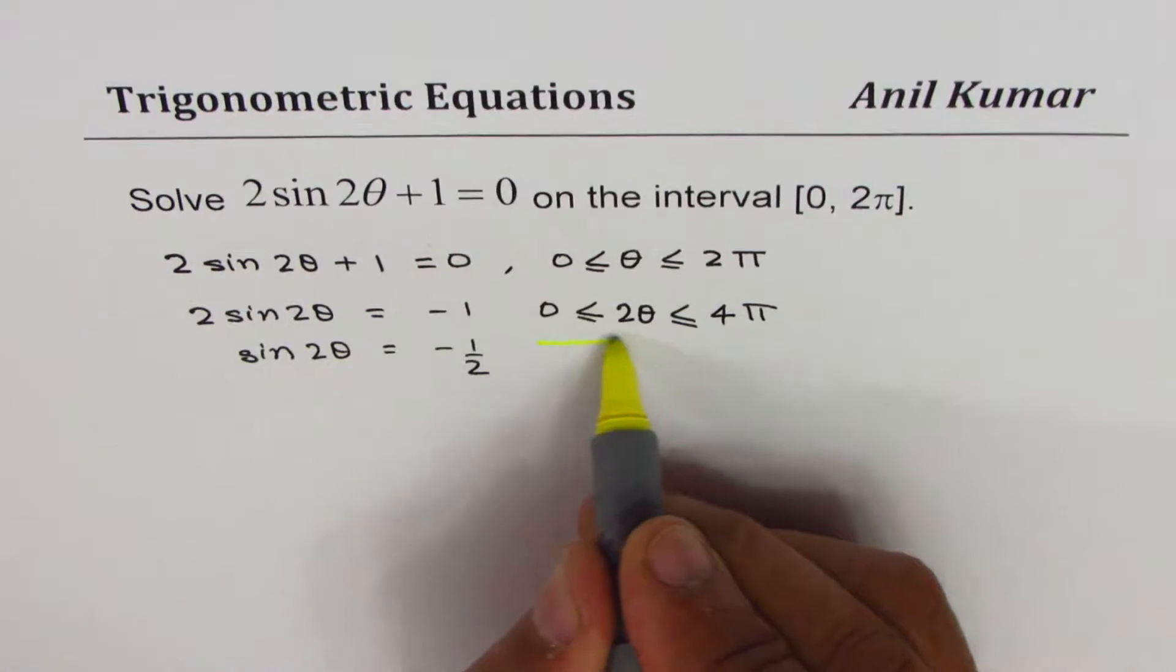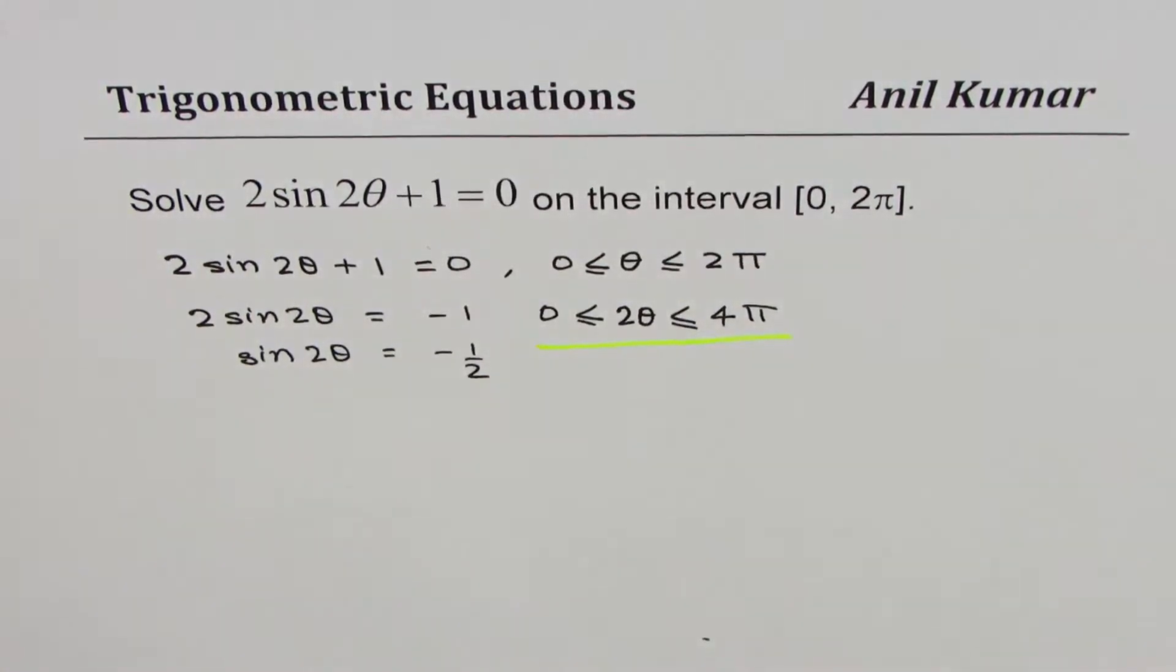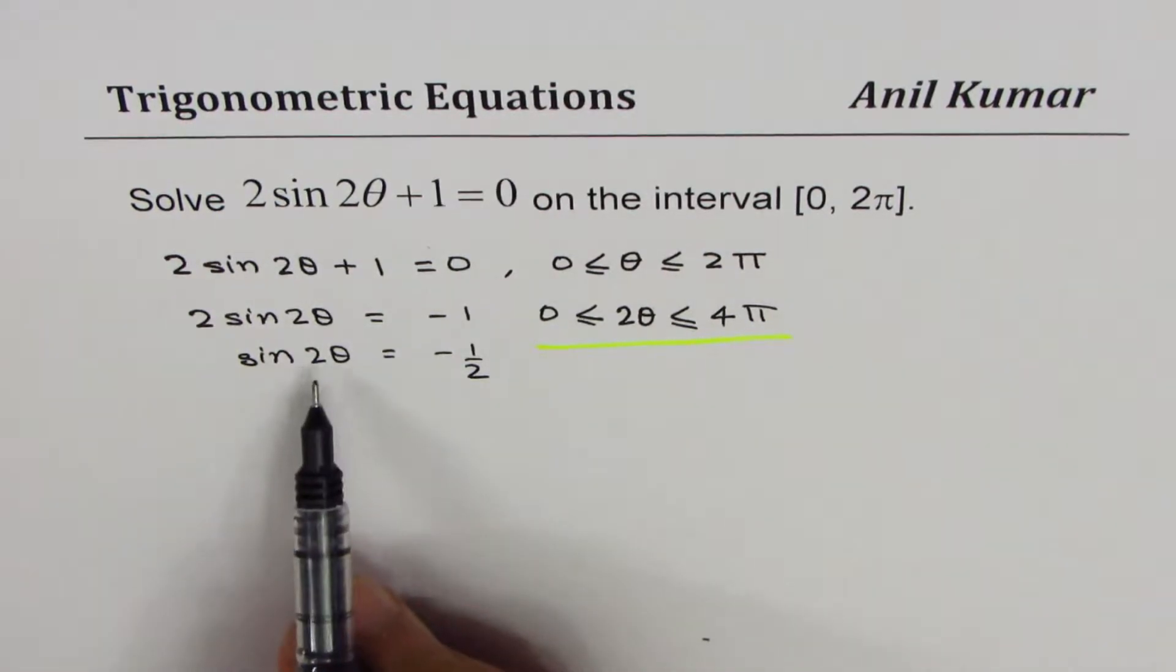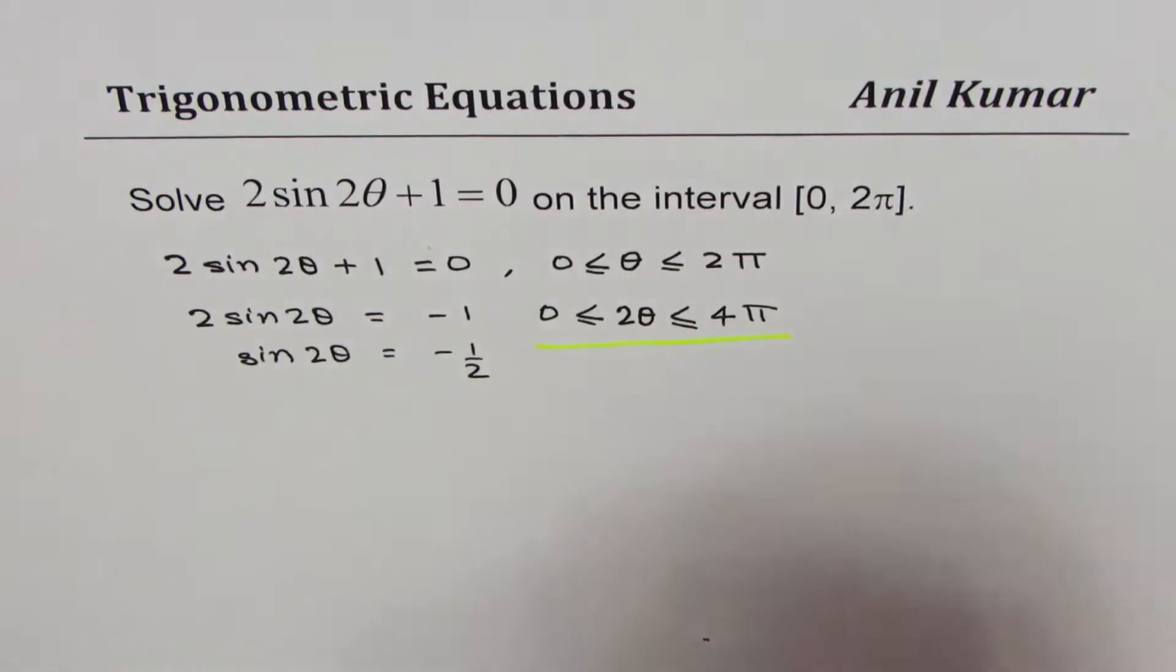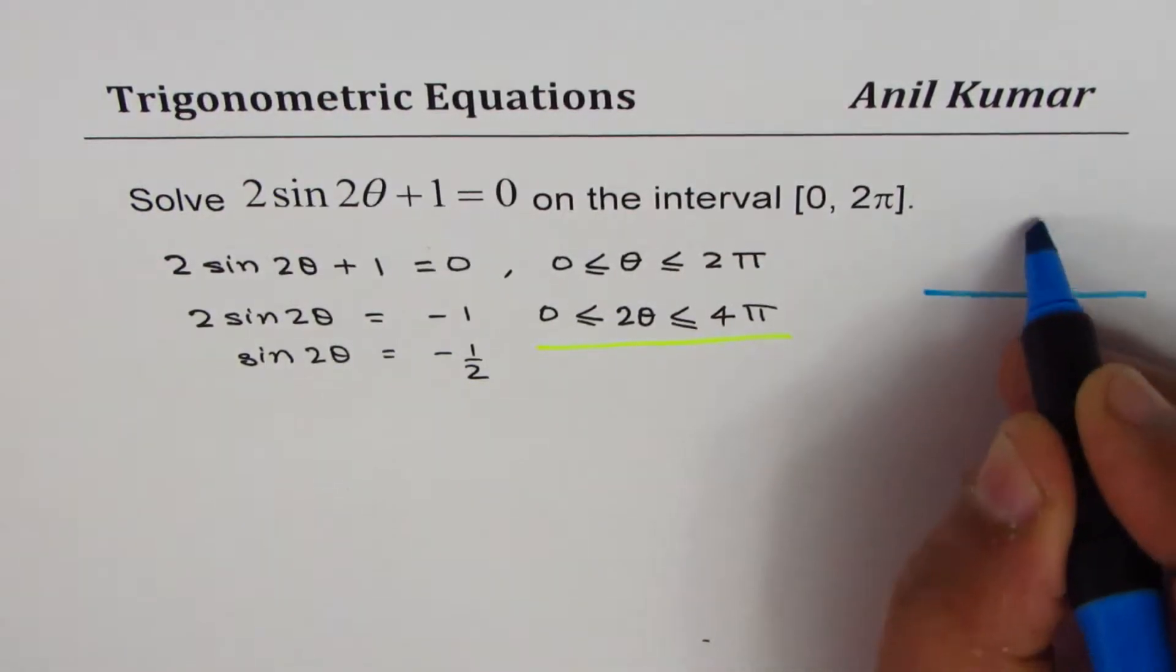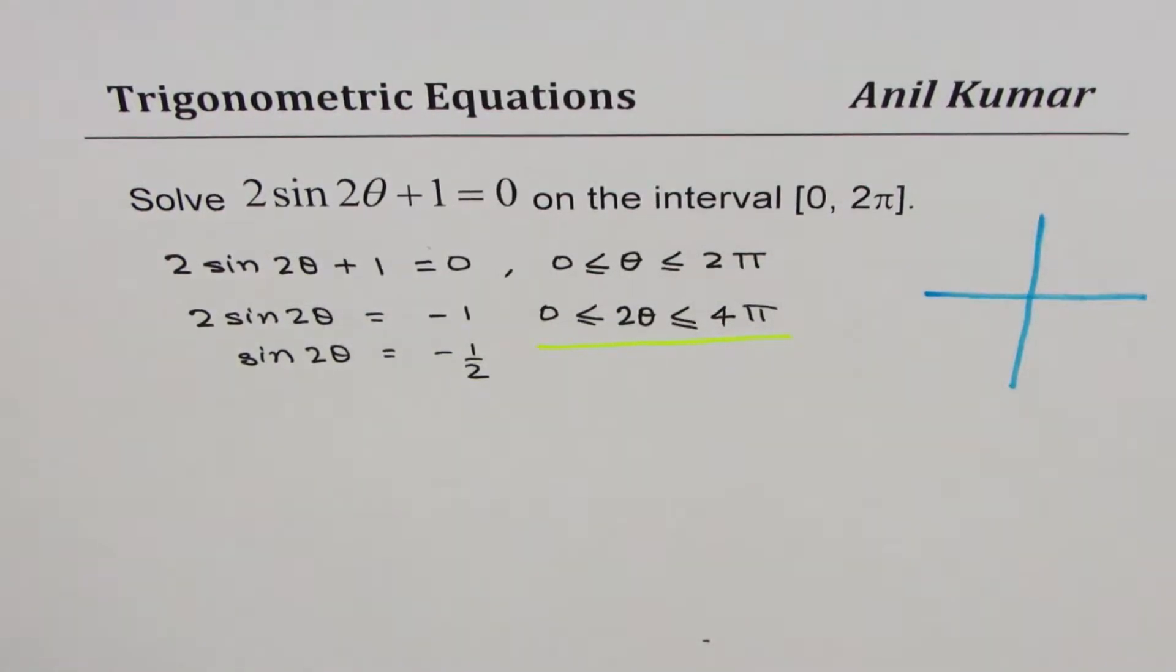This is very important to understand. Make a note of this: if θ is between 0 to 2π, 2θ is between 0 to 4π. Now we're looking for sin 2θ being equal to minus half.